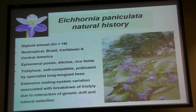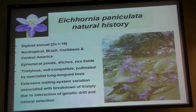Outcrossing in this system is promoted by a genetic polymorphism known as tristyly, where there are three mating morphs within populations. But this system breaks down quite often. When it breaks down, it gives rise to selfing populations. What I want to talk about is what happens when these selfing populations go places — specifically the colonization of the geographical margins of the range.